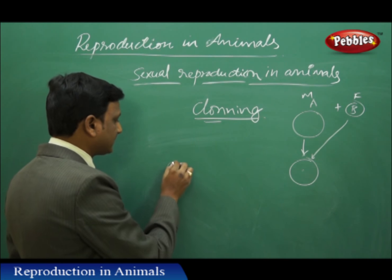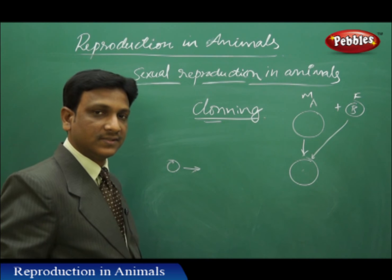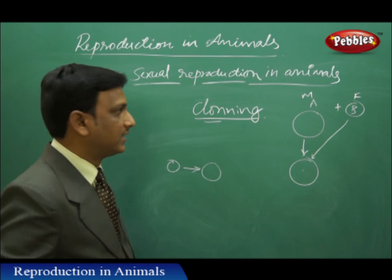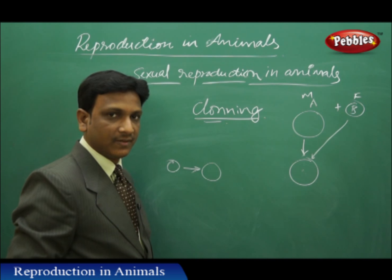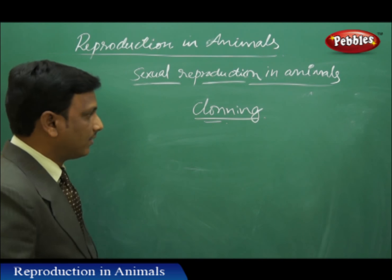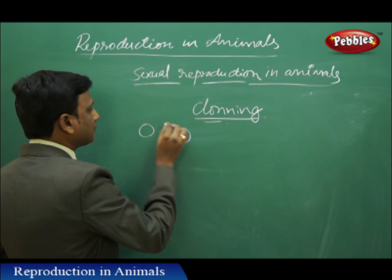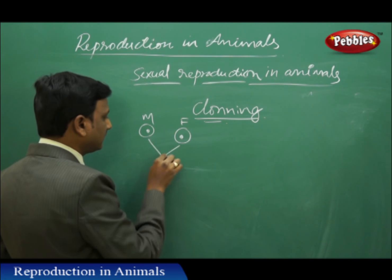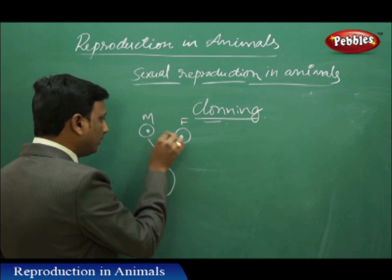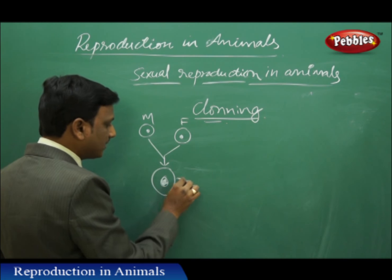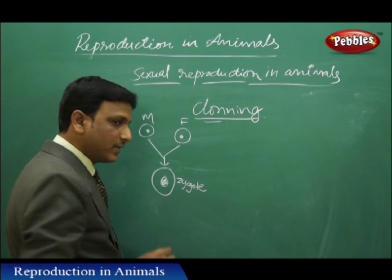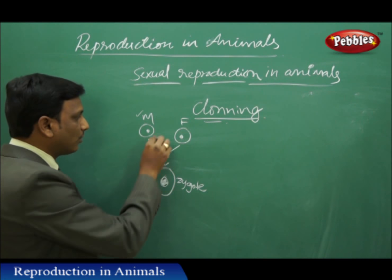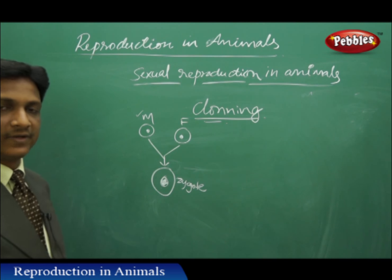If there is a person with certain characteristics, we can produce another person with the exact same characteristics and exact appearance — that is possible by cloning. In normal reproduction there are two gametes, male and female, each having a nucleus. When they fertilize, both nuclei join and a common nucleus is formed in the zygote. So the baby exhibits characteristics of both mother and father, because both nuclei are clubbed together. This is normal fertilization.